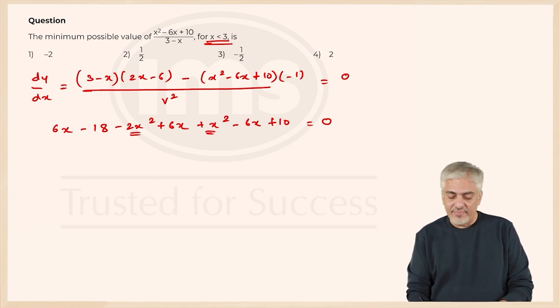So we are left with negative x square, 6x and minus 6x cuts out, so I am left with a plus 6x plus 6x minus 18 plus 10 is minus 8 is equal to 0, divide by negative 1, so x² minus 6x plus 8 is 0.